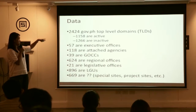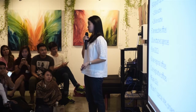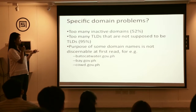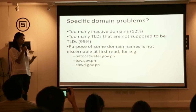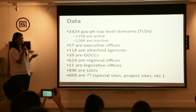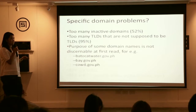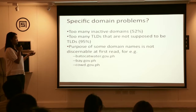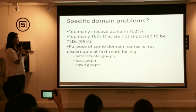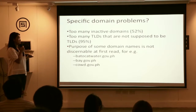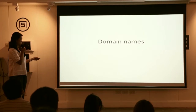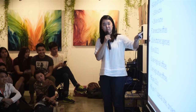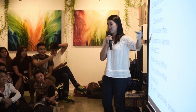Going to the specific domain problems: there are too many inactive domains — 1,266 out of 2,424 are inactive, meaning you can't view them, they're not pingable, there's no way you can see the content. There are also too many TLDs that are not supposed to be top-level domains. Supposedly the top-level domains should just be the 57 executive offices, because there's a hierarchy.